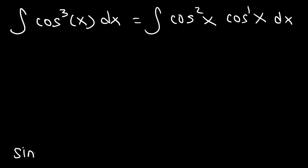Now, you need to know the Pythagorean identities. Sine squared plus cosine squared is equal to 1. So, if we subtract both sides by sine squared, cosine squared is 1 minus sine squared.